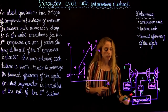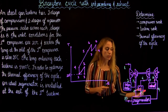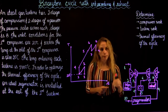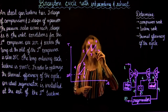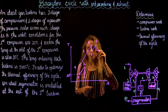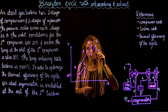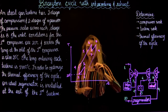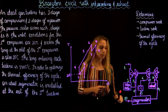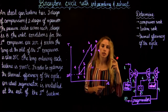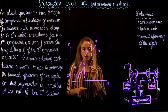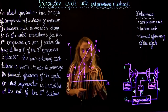From 9 to 10, we go through the regenerator, going down in temperature at constant pressure to state 10. Then from 10 to 1, we continue cooling the fluid back to state 1 at constant pressure.